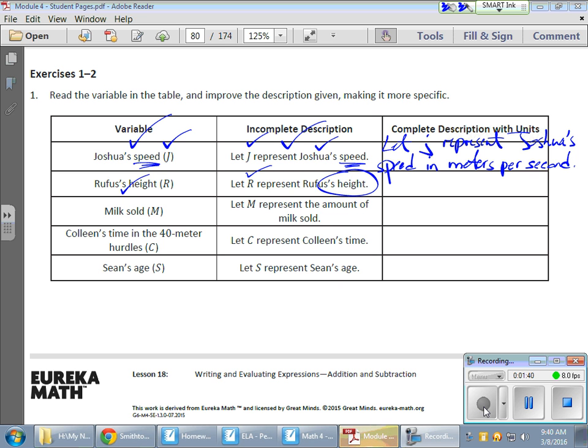Amount of milk sold. We're talking about an amount here. Are we talking about quarts of milk? Are we talking about gallons of milk? That needs to be understood. So when we're writing our complete description with units, we need to make sure that things are very specific so that when we come up with an answer, it makes sense. Time, minutes or seconds or months or years or whatever it is, age, whether that's months or years, that kind of thing.